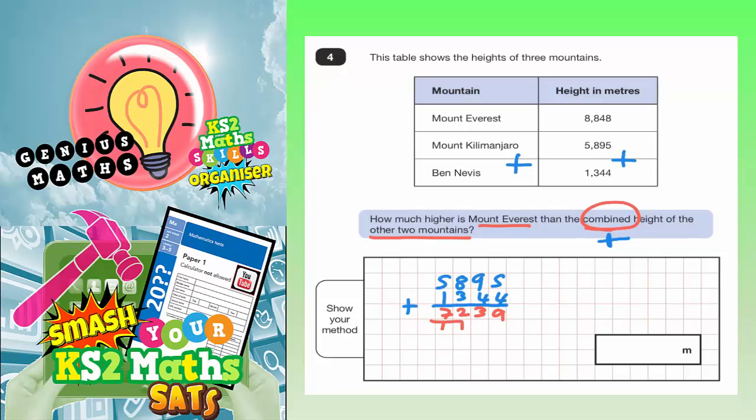So the combined height, this answer here of 7,239 metres, that is the combined height. That's the bit that it's asking for in the question there.